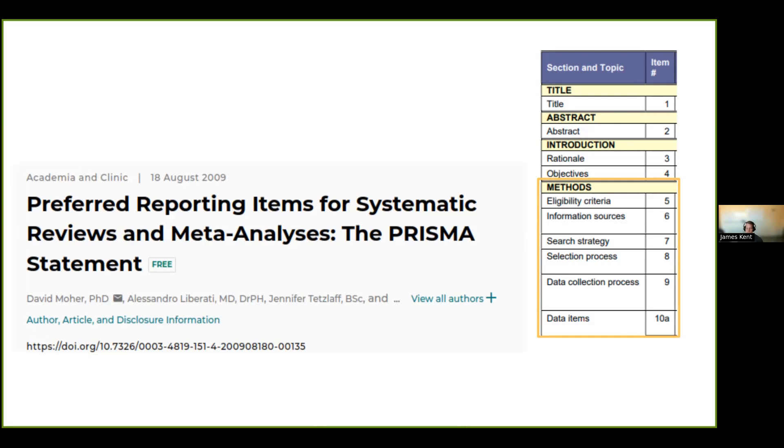And that is this methods section. So other parts of the PRISMA statement are being implemented on our platform, and you will not have to think about them as much. But these steps are the steps that the user has the most control over. That's determining the eligibility, the information sources, what search strategy you want to use, what selection process you're using, the data collection process, and the data items are made easier through our platform, through extraction and annotation. But for manual editing and labeling, the user is still in charge of those items.